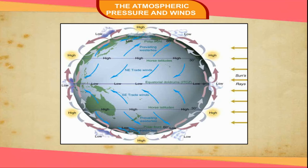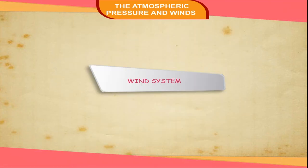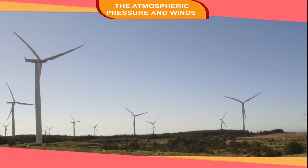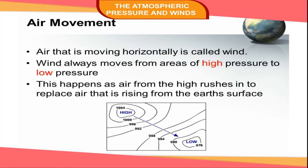All these pressure belts are not permanent in character. They keep shifting to the north and south with the movement of the sun. It is the temperature which controls the pressure belts. When the sun moves from one tropic to another, the pressure belts also do the same. This is called shifting of the pressure belts. Wind System: When hot air rises and creates a region of low pressure, cold air from neighboring high pressure areas moves towards low pressure areas. This horizontal movement of air is called wind.